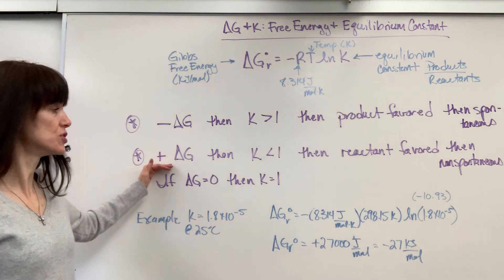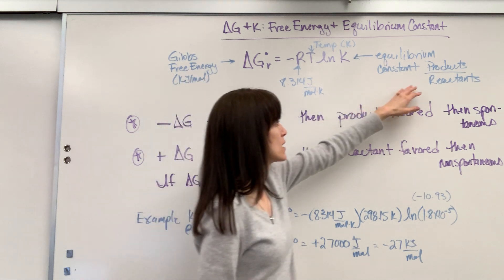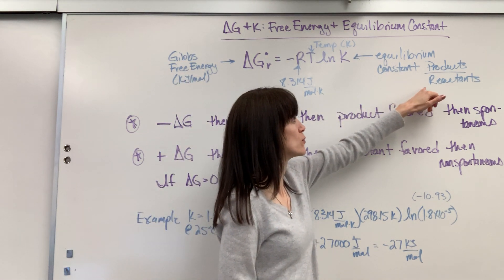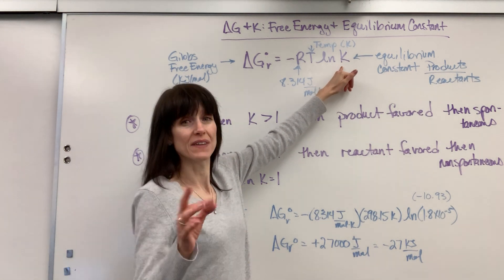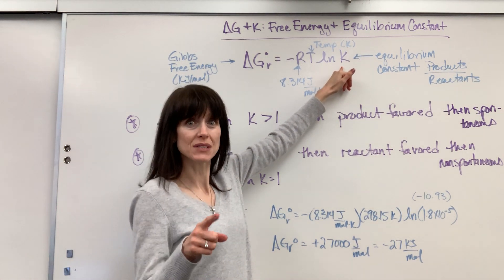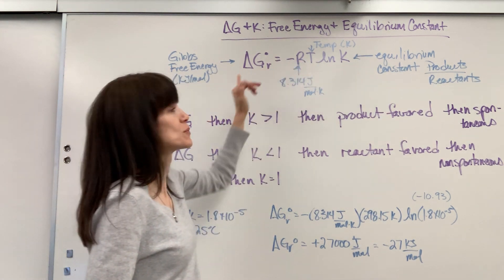Now, if it's a positive delta G, then K is less than 1. So if I have a value here, K is less than 1, so I have more reactants than products. The natural log of K, that is the natural log of a decimal, something less than 1, is going to be a negative value. Negative times negative is positive.